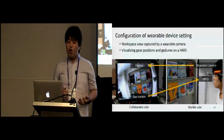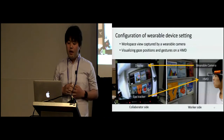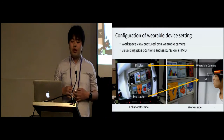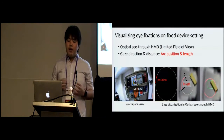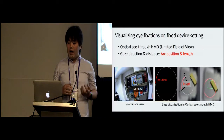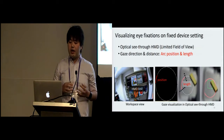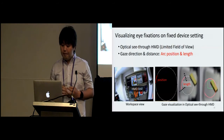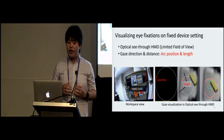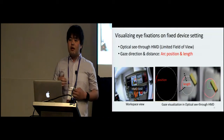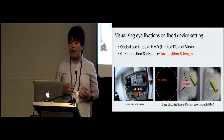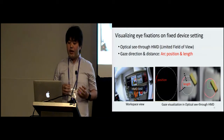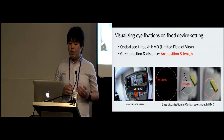This slide shows the system configuration of the wearable device setting. Unlike the fixed setting, the worker side has a wearable camera and a head mounted display. The wearable camera's view changes according to the worker's head movements. An important difference is that the worker's HMD has a very limited field of view. We use an optical see-through HMD that can directly overlay information on the worker's eyes. The HMD's field of view, illustrated with the yellow square, is much smaller than the wearable camera's field of view. Therefore, the collaborator's eye position cannot be shown to the worker unless it is inside the yellow square. To overcome this issue, we design an indicator of gaze direction and distance via arc position and length.